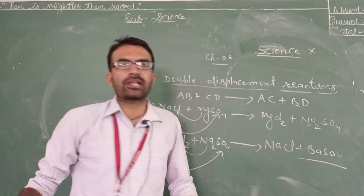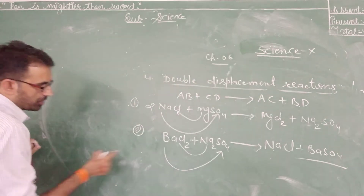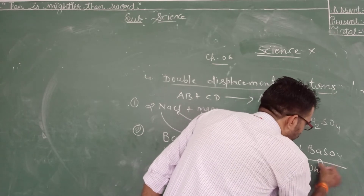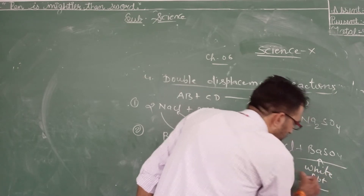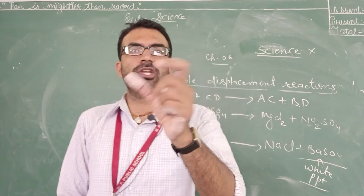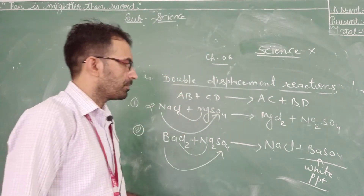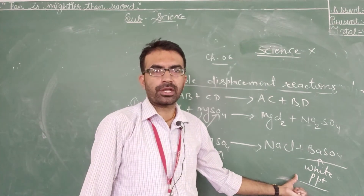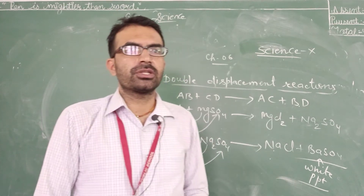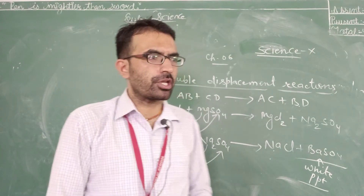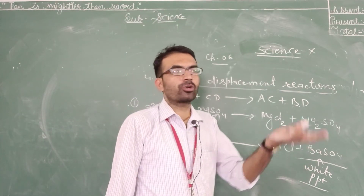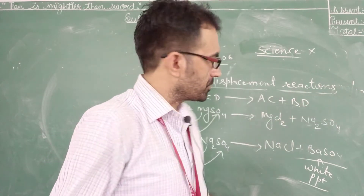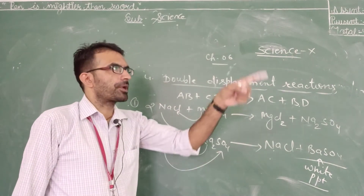This is also an example of a precipitation reaction. In this chemical equation, BaSO4 is formed as a white precipitate. Precipitates are those substances which are insoluble in water. If they are higher in density, they settle down in the solution; if they are lower in density, they float on the surface of the solution.